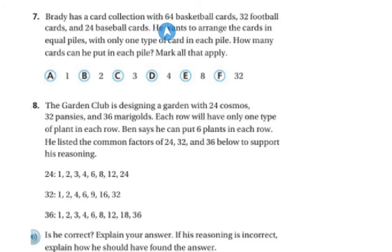Brady has a card collection with 64 basketball cards, 32 football cards, and 24 baseball cards. He wants to arrange the cards in equal piles with only one type of card in each pile. How many cards can he put into each pile? On this one, you're going to want to take your 64, 32, and 24, and write all of the factors, then circle the ones they have in common.